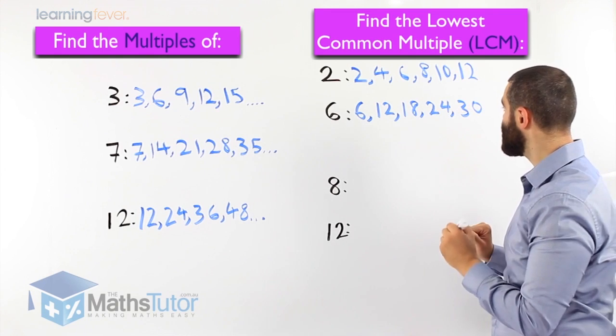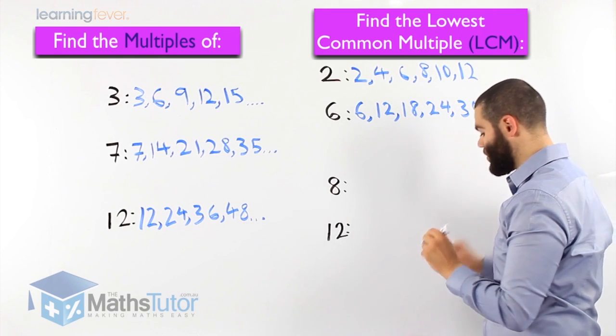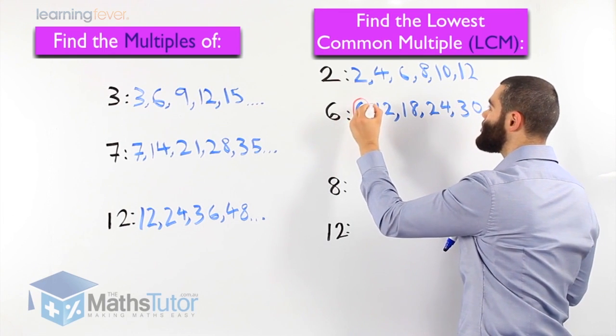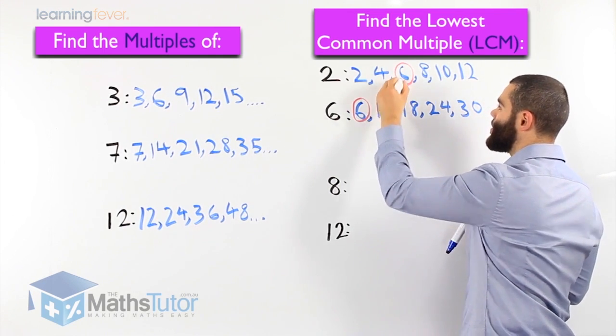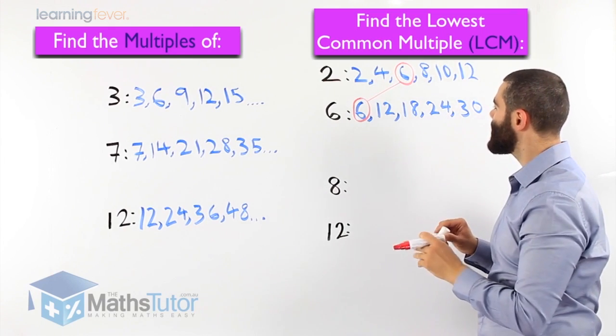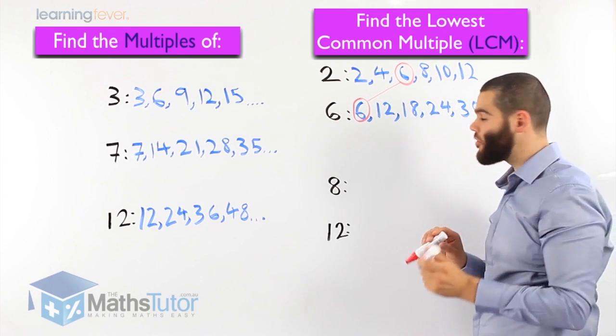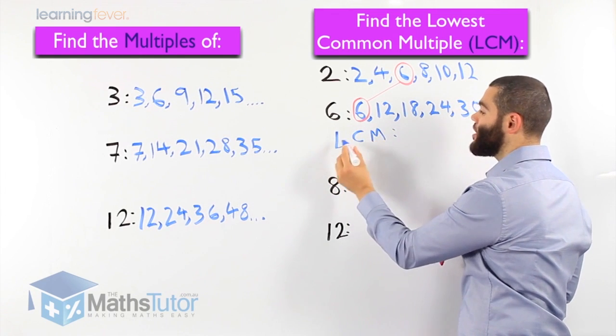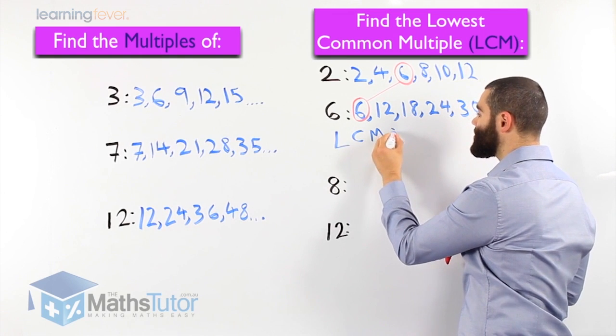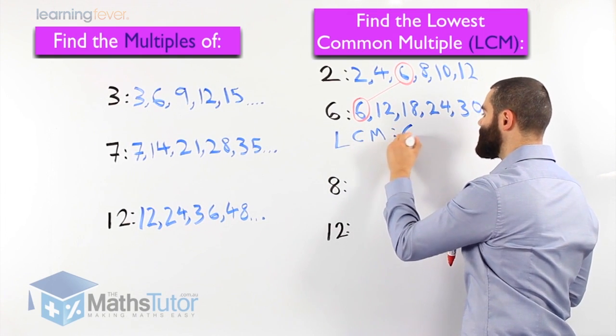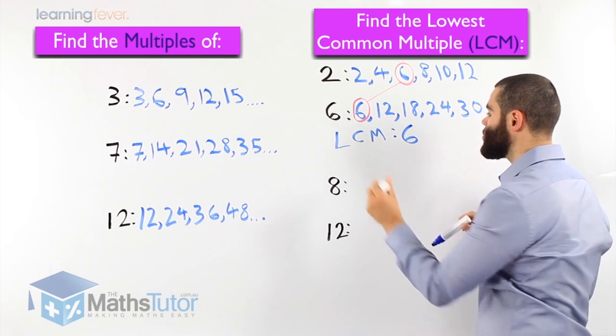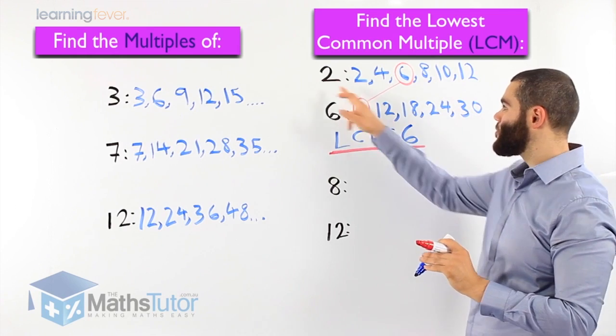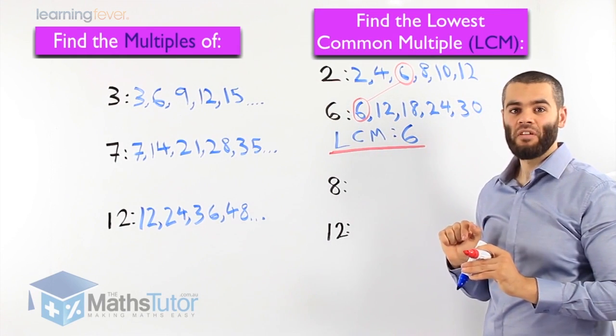Let's find the lowest common one. The lowest common one we can see, we know 6 is common, and 6 is common here. And there's no other lower number that is common, so therefore the LCM, which is the lowest common multiple, in this case here is 6. So the lowest common multiple we have is 6. The lowest common multiple between 2 and 6 is actually 6.